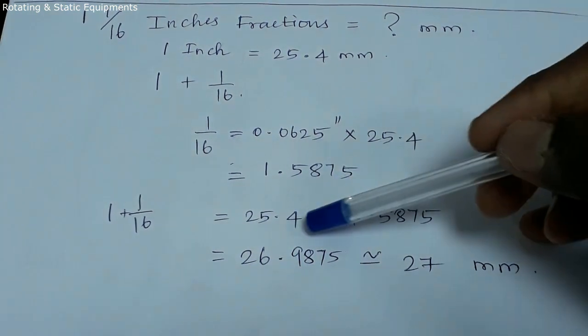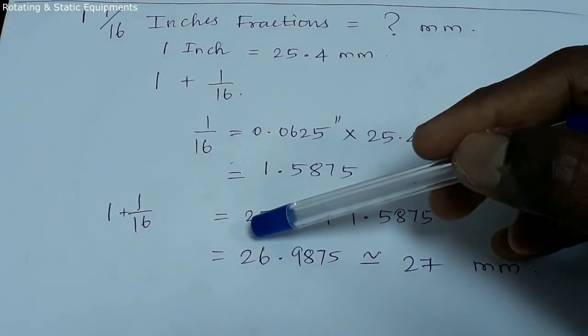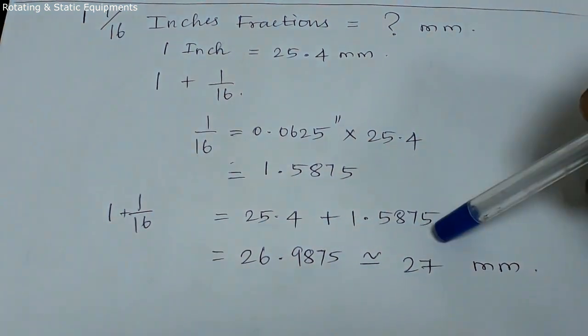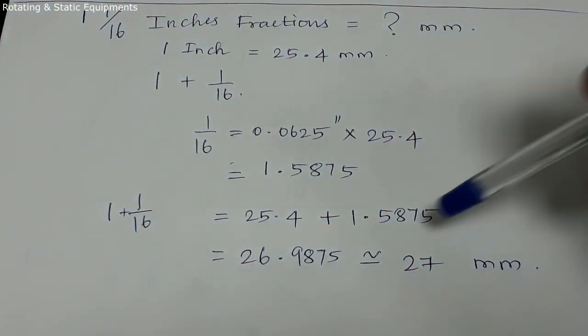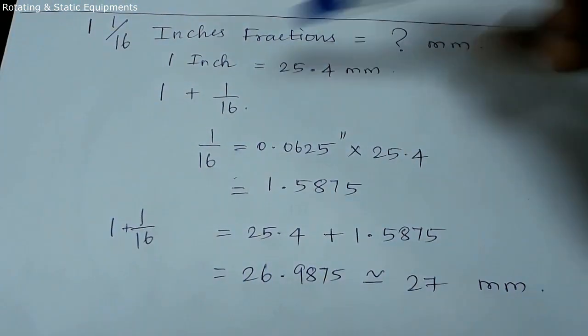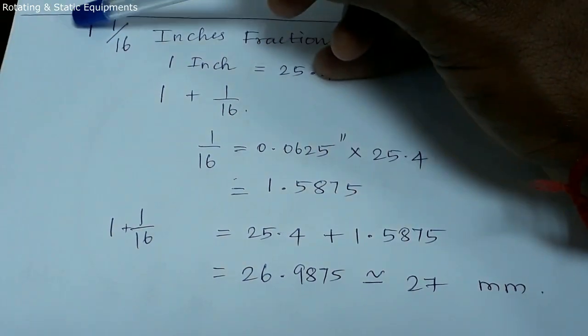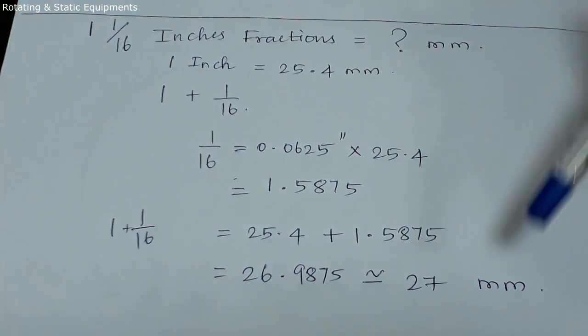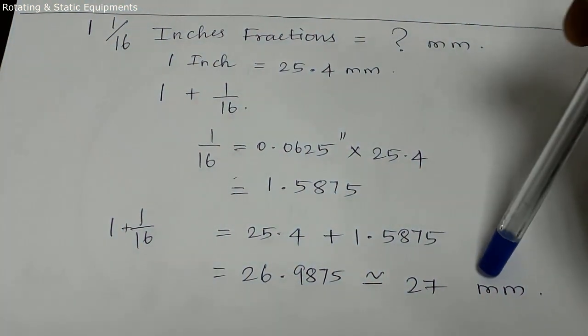Now we add 25.4 plus 1.5875, which equals 26.9875. In the value of 26.9, we round to 27. So adding 1/16 to the spanner gives 27mm.